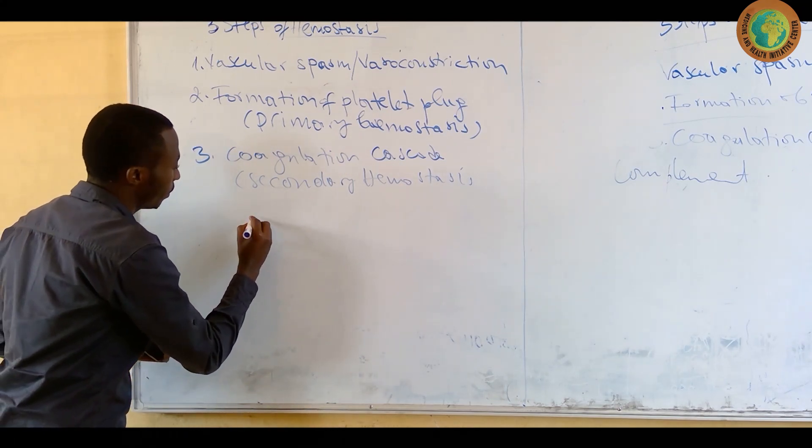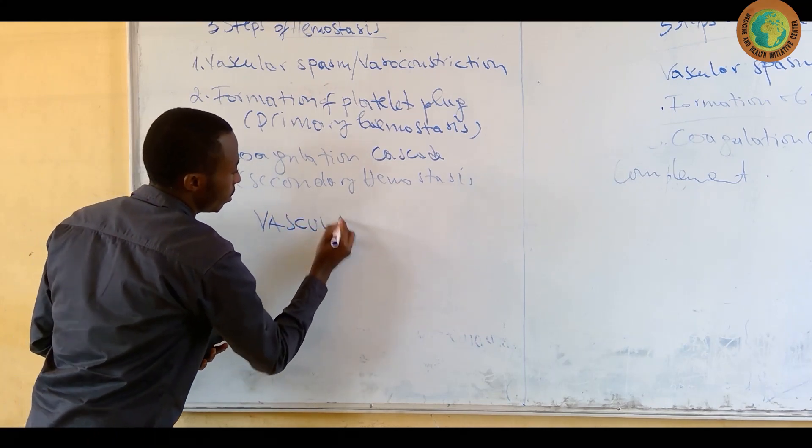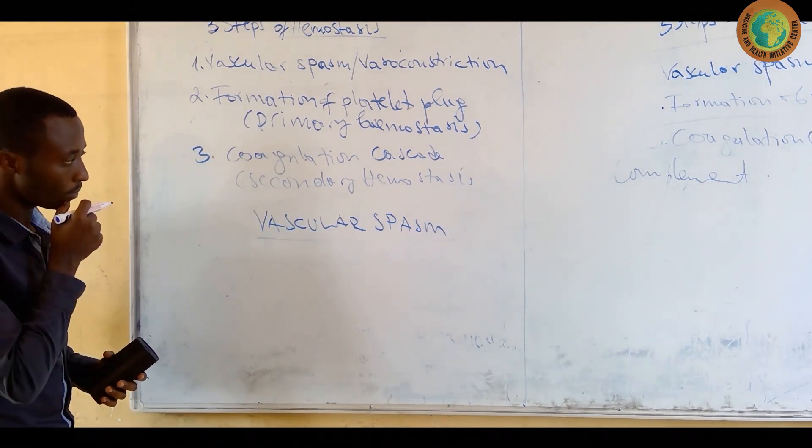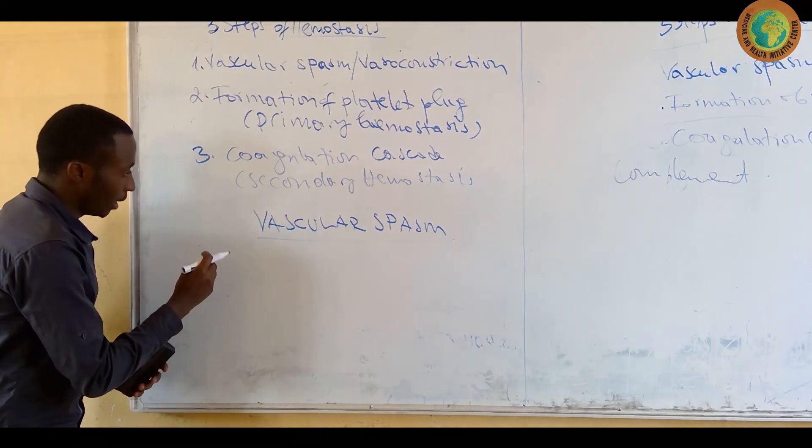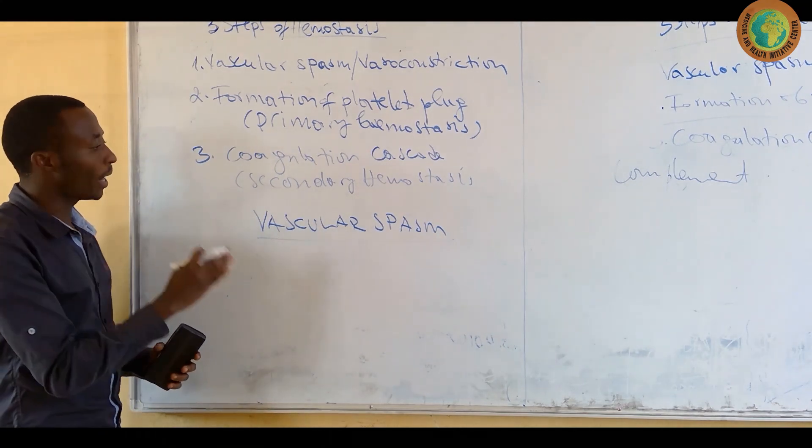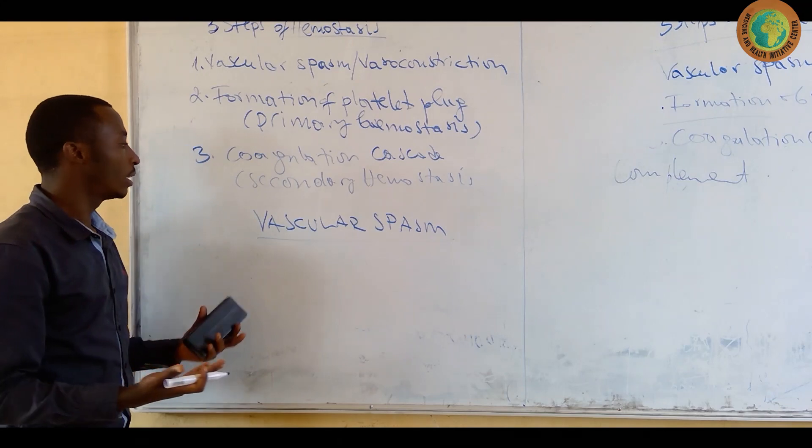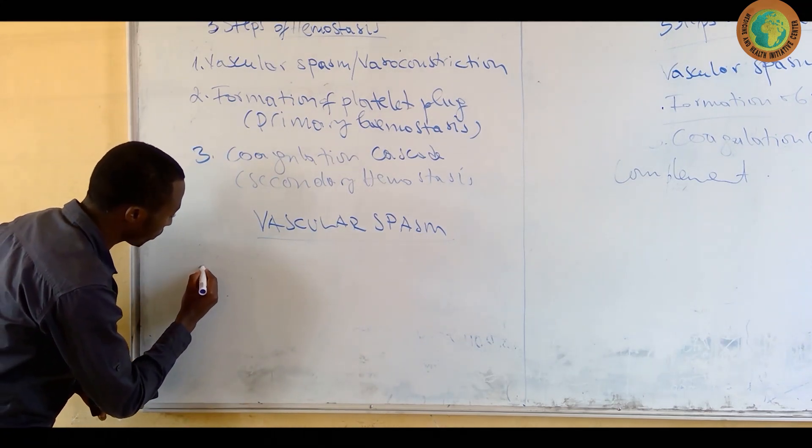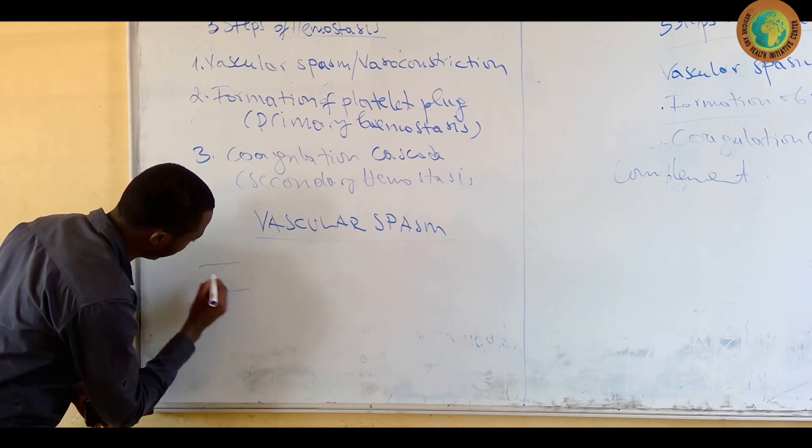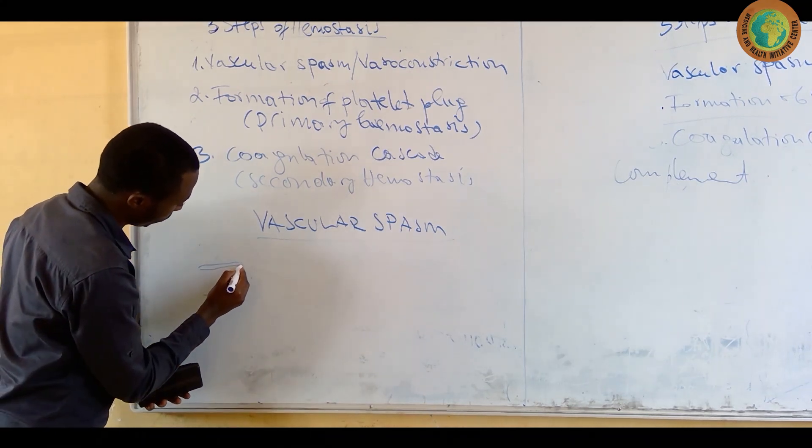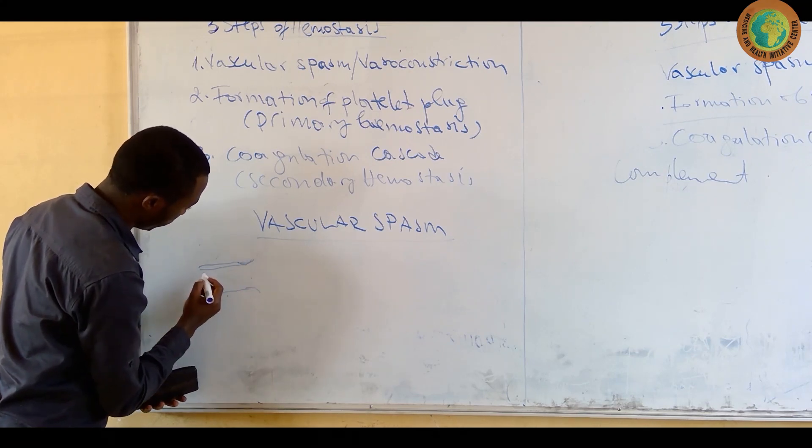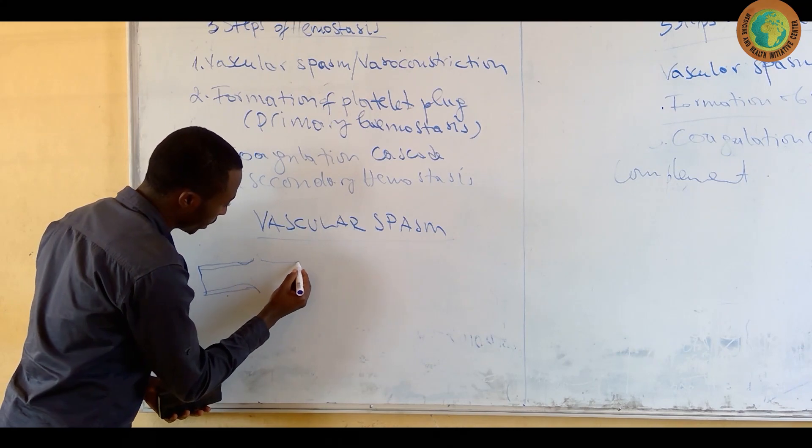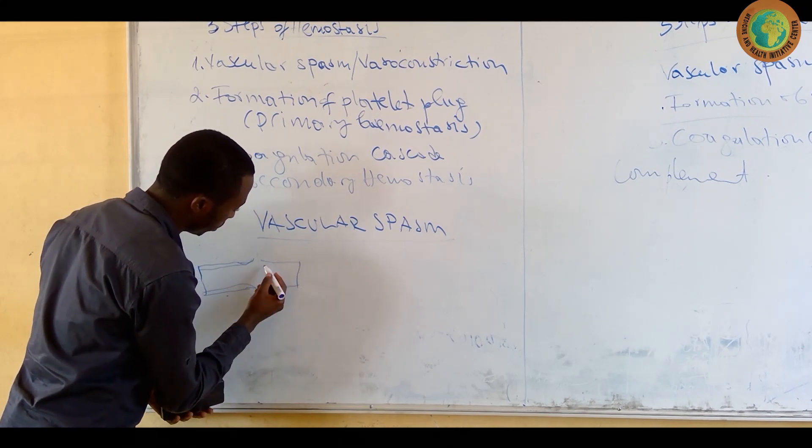We are going to discuss, that's one by one. This starts by vascular spasm or vasoconstriction. This vascular spasm starts when a blood vessel is damaged. For example, let us sketch something like a blood vessel. This is a blood vessel which is somehow blocked, a blood vessel which is blocked somewhere here like this.